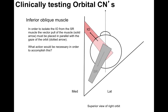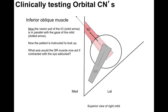Now the inferior oblique muscle is highlighted with the superior rectus muscle greyed out. In order to isolate the inferior oblique from the superior rectus muscle, the vector pull of the muscle — that solid arrow — must be placed in parallel with the gaze of the orbit — the dotted arrow. To accomplish this, the patient adducts their eye. Now the vector pull of the inferior oblique is in parallel with the gaze of the orbit, and the patient is instructed to look up.